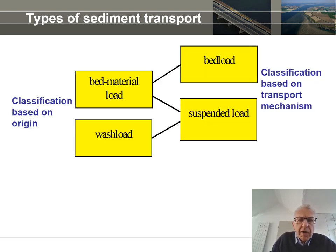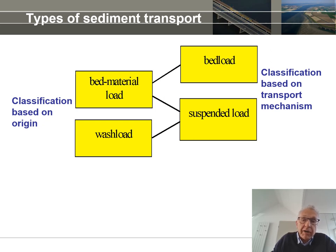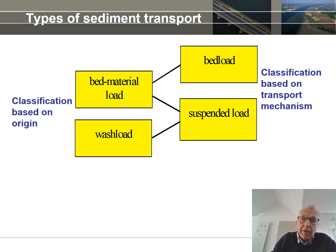It is important to be aware that there are different types of sediment transport. We can make a distinction based on origin, distinguishing bed material load — transport of sediment equal to the material on the bed, which depends on flow strength — versus wash load. Wash load is transport of material so fine that it only depends on what comes in upstream; whatever the flow does, it is unaffected and passes undisturbed downstream. Bed material load would be sand or gravel; wash load is mainly clay and silt.